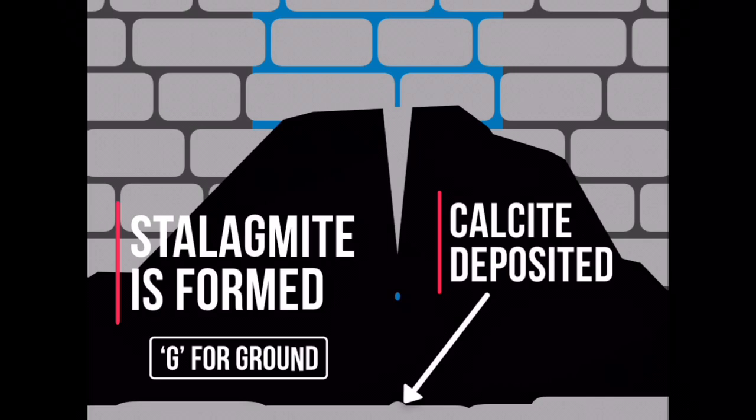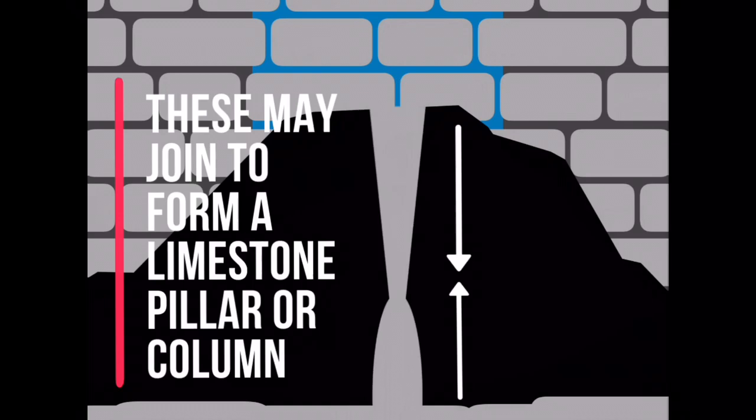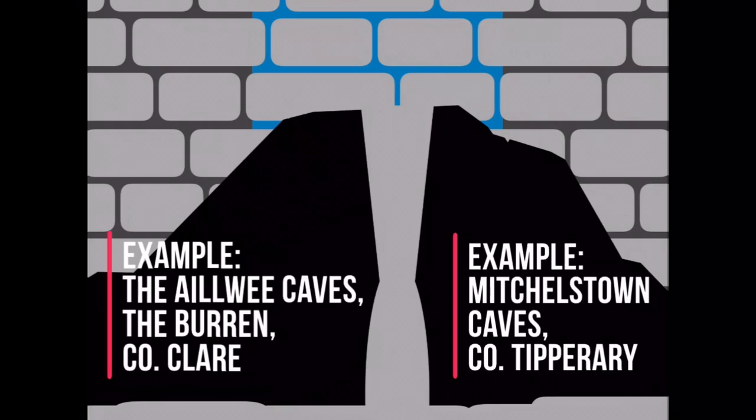As water drops to the cavern floor below, calcite is also deposited. This builds up over time to form a stalagmite. Eventually the two may grow to meet and join in the middle to form a limestone pillar.